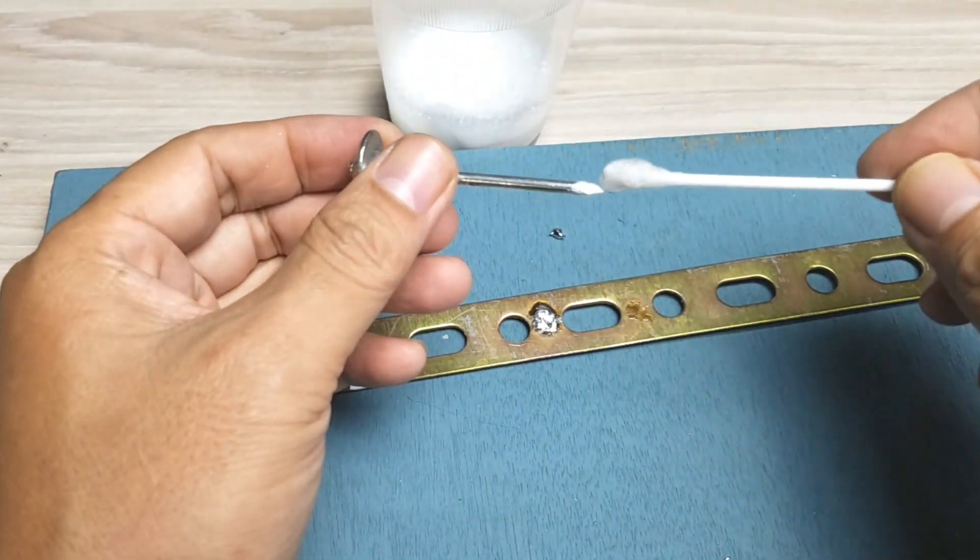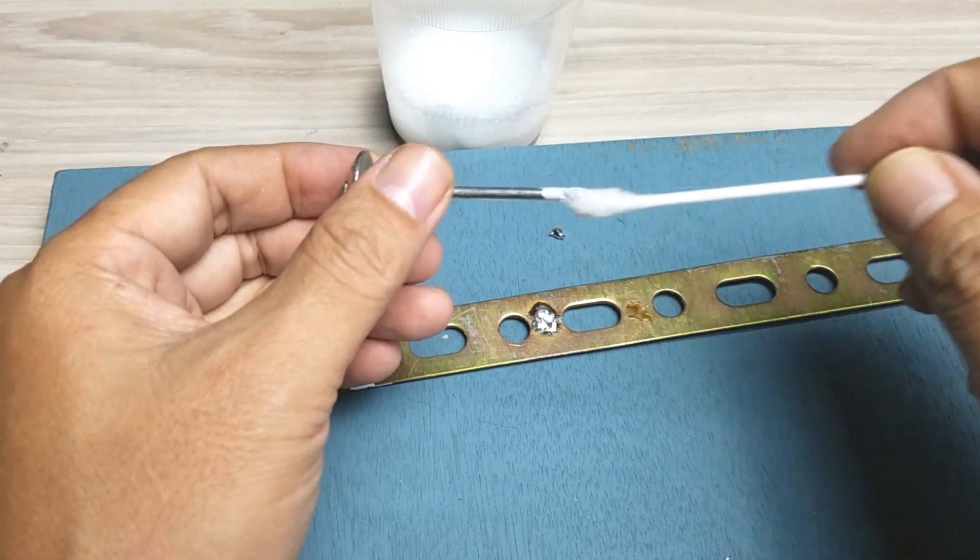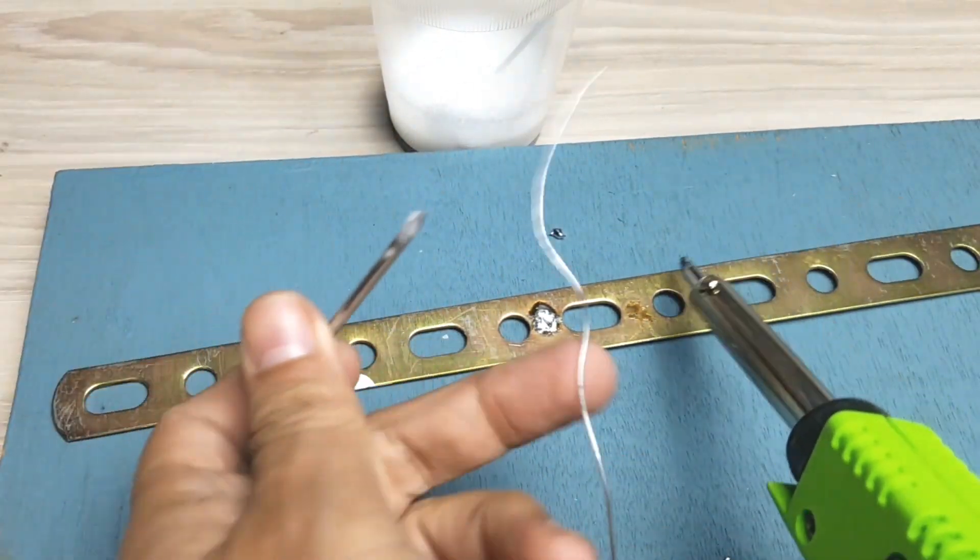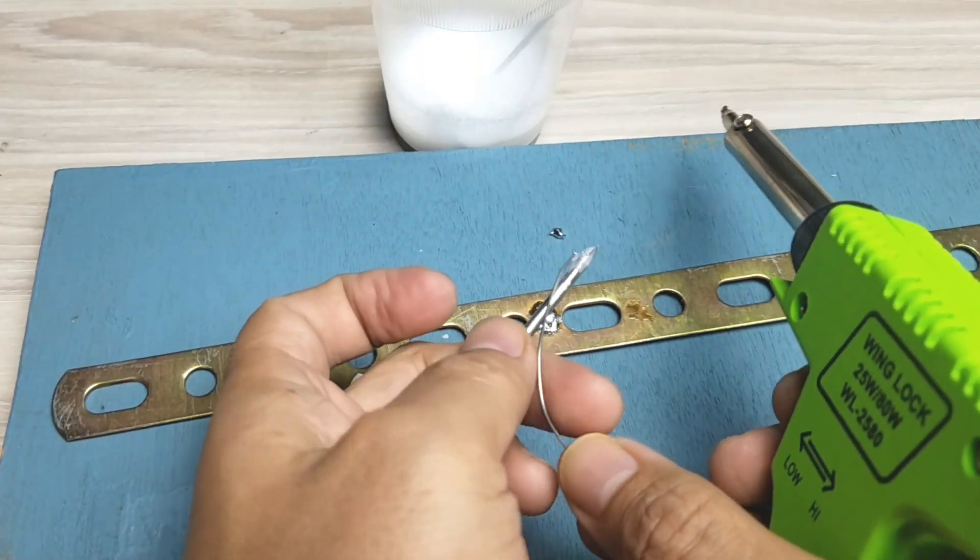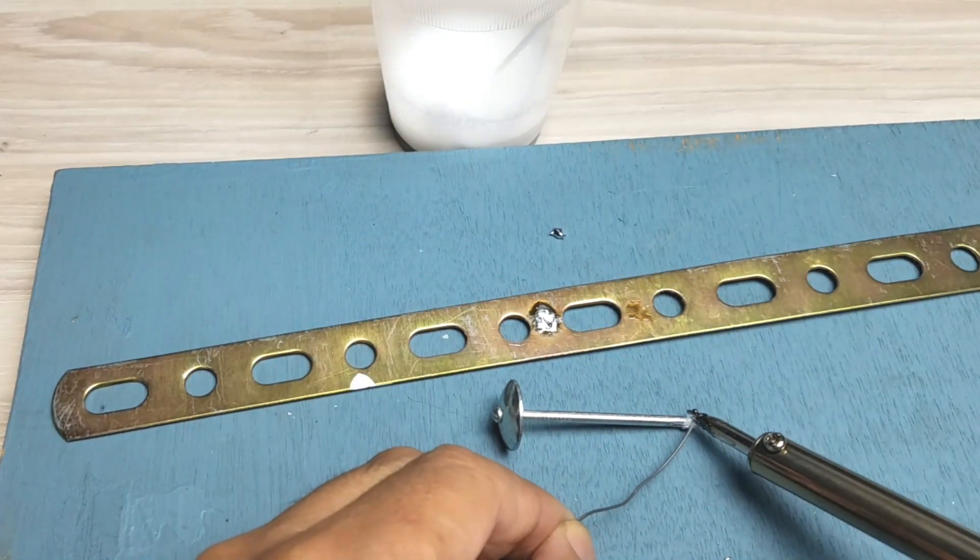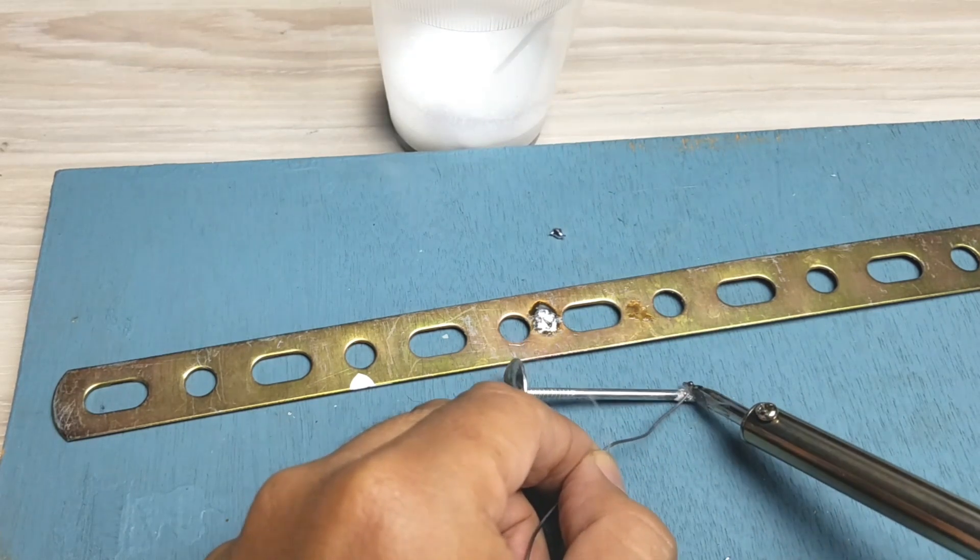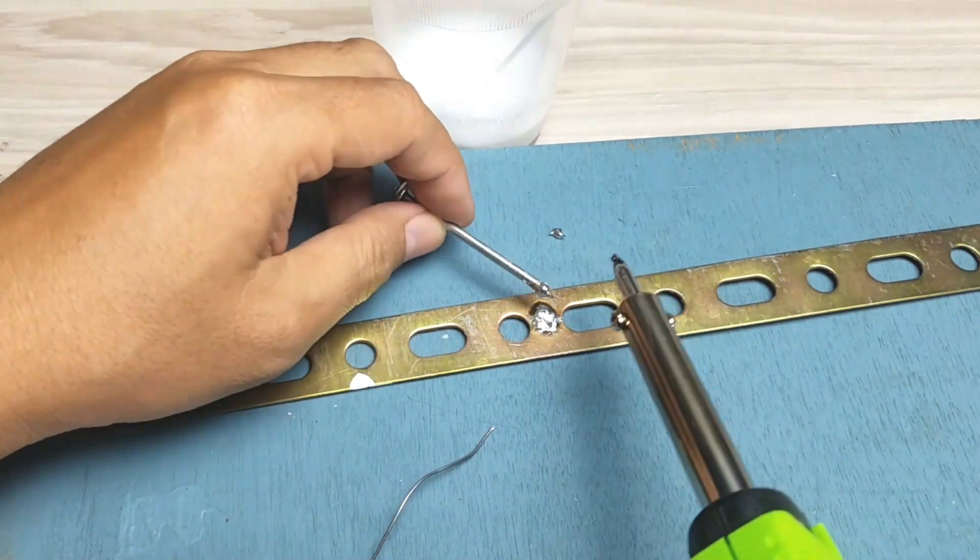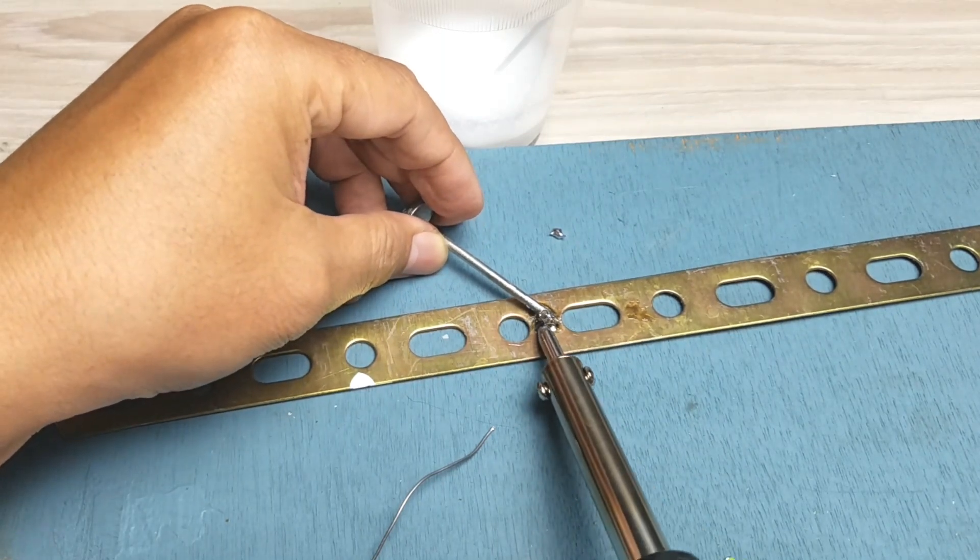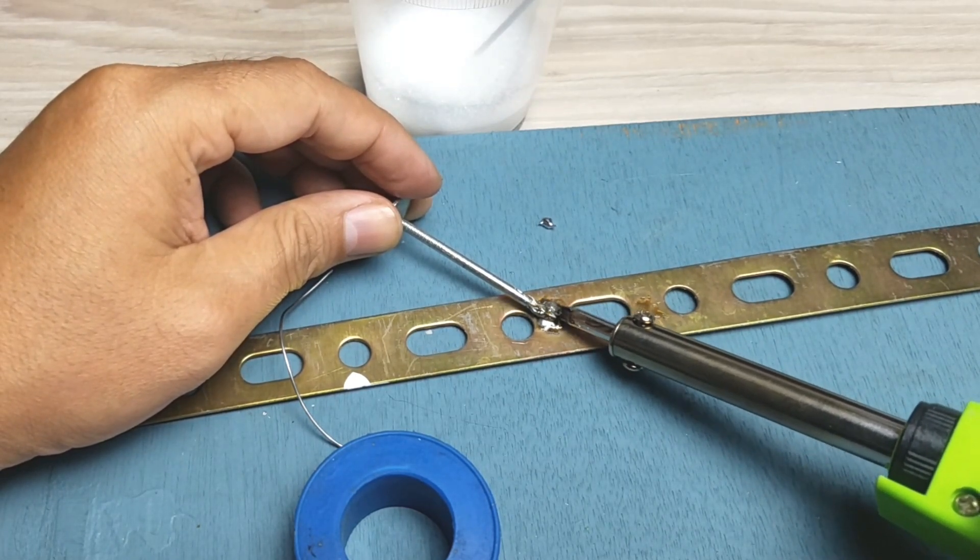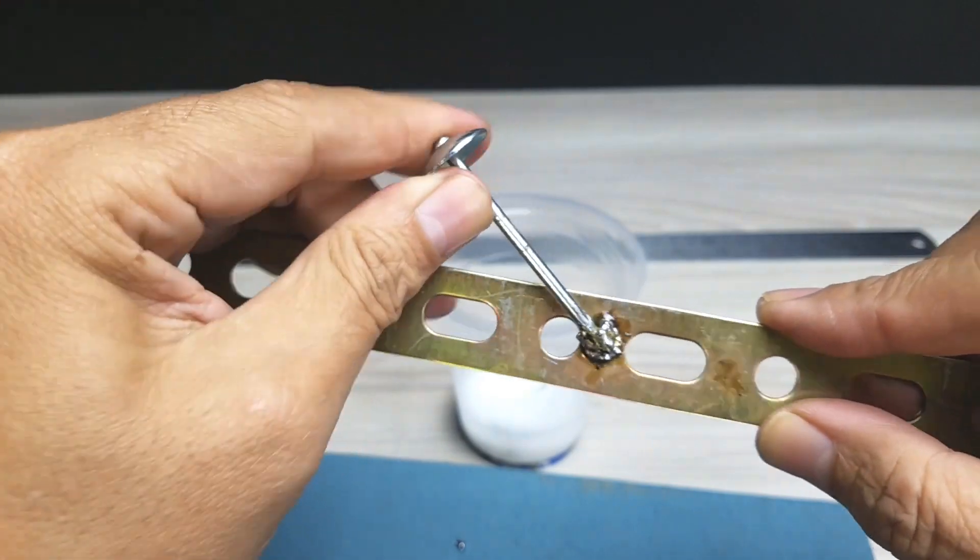Ini kita coba tempelkan paku teman-teman. Kita akan sambungkan paku ini ke besinya. Langsung saja kita rekatkan. Seperti ini teman-teman. Ini sangat kuat sekali teman-teman ya, jadi merekatnya benar-benar kuat.